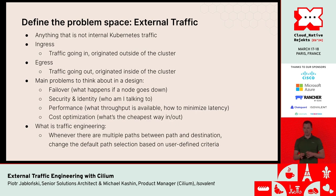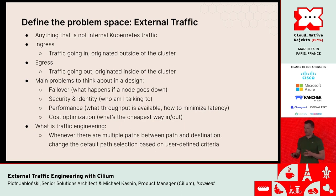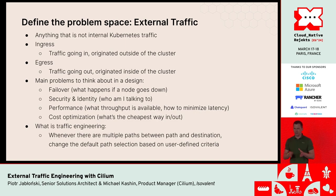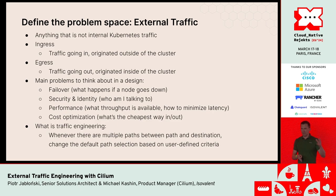Traffic engineering is a vague term that means many things to different people. For us specifically, it means a way to modify the default behavior or default forwarding path between a source and destination. Once you build a Kubernetes cluster, packets will take a default path. Traffic engineering is a way to augment or change this behavior — to make traffic go a different way based on user-defined configuration.